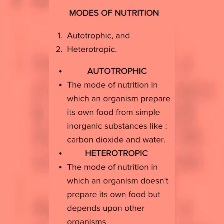Autotrophs are independent for their food. Heterotrophic nutrition is just the opposite of autotrophic, because in this mode of nutrition the organism does not prepare its own food, and in order to get food these organisms are dependent upon other organisms.